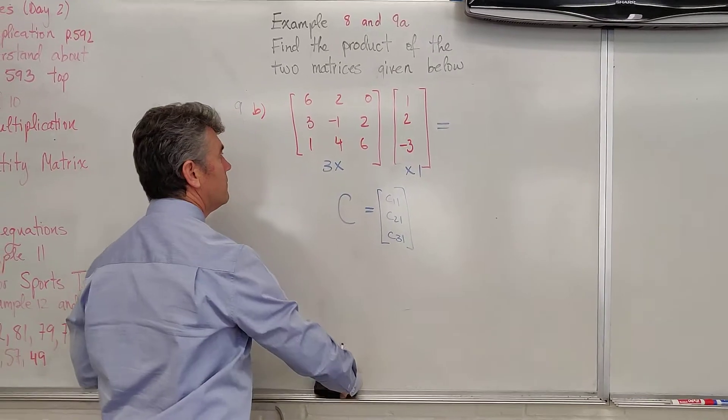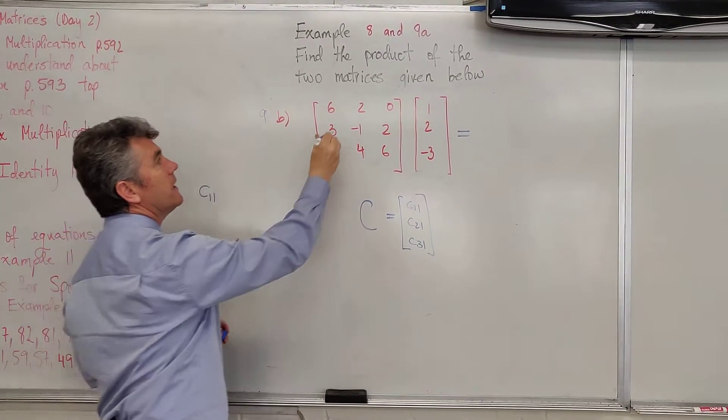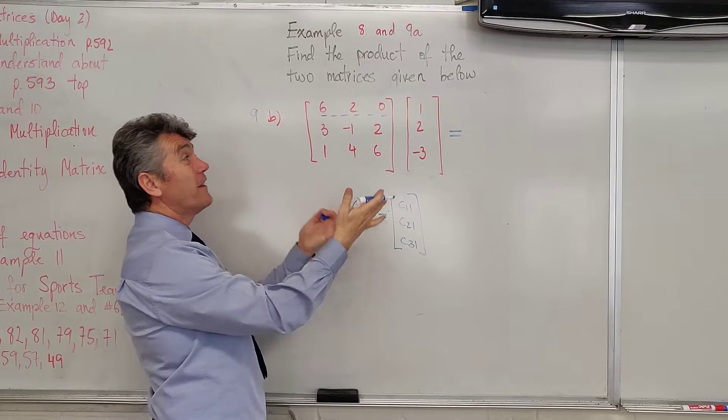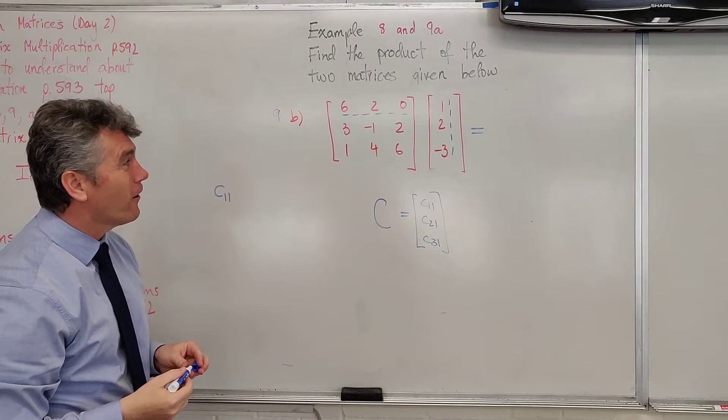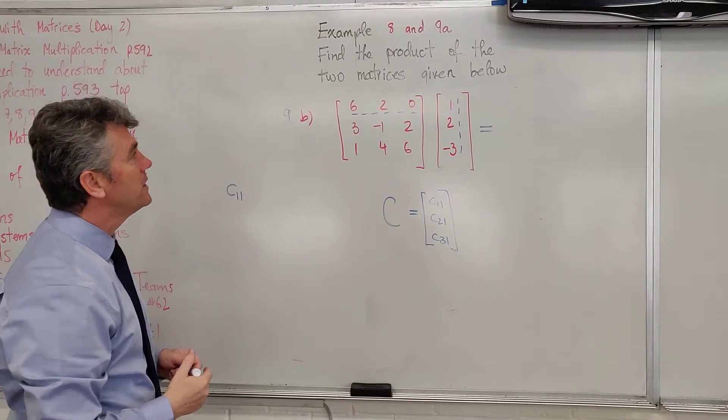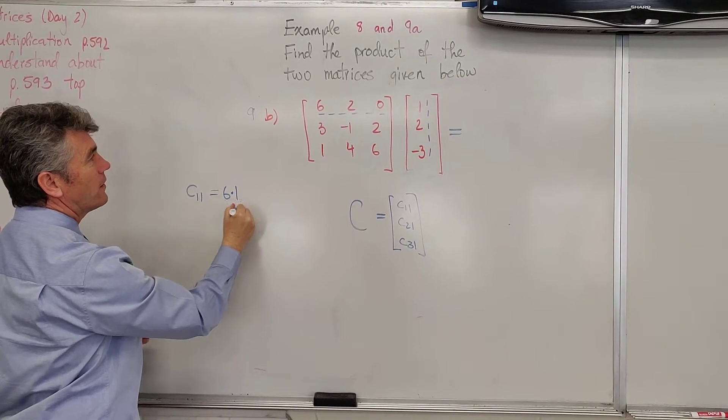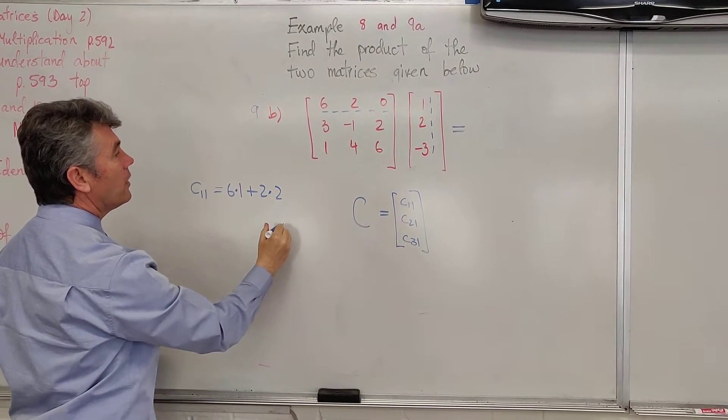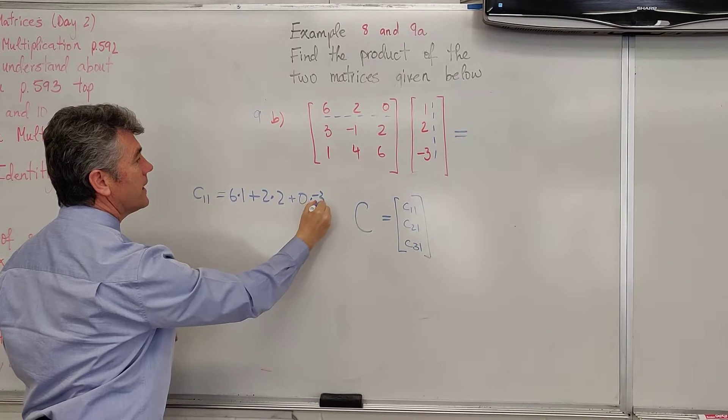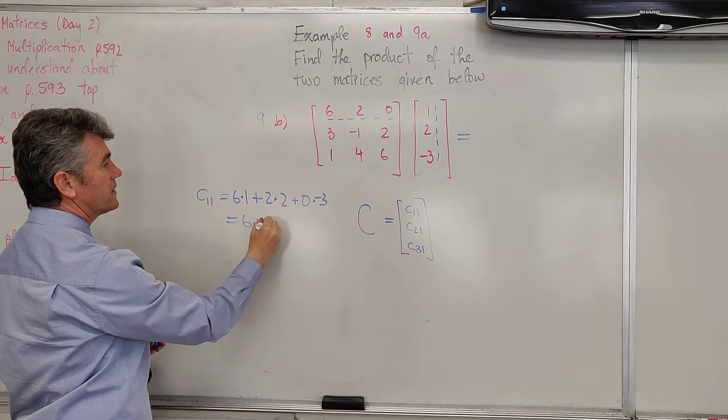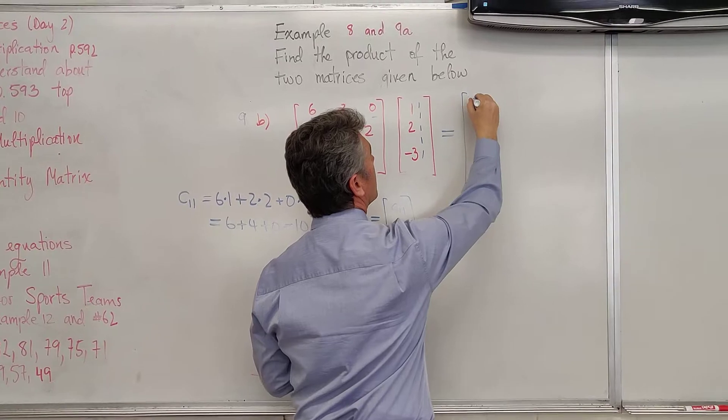So, let's find those entries. To find C11, we're going to take the first row. There's nothing else to multiply by, other than the lonely column in the entire matrix. Let's find it. So, first times first. Six times one. Second times second. Plus three times two. And third entry times the third entry. So, zero times negative three. Six plus four plus zero is ten. We have a ten.